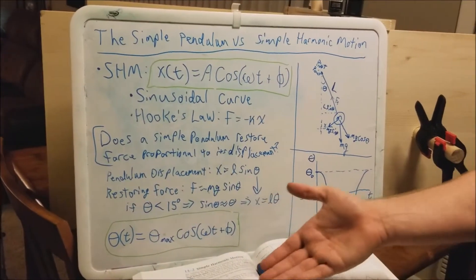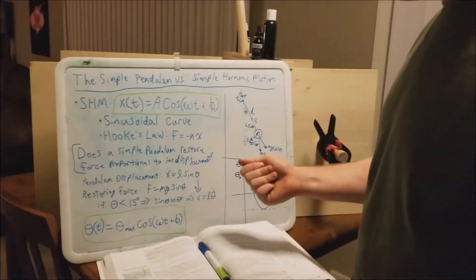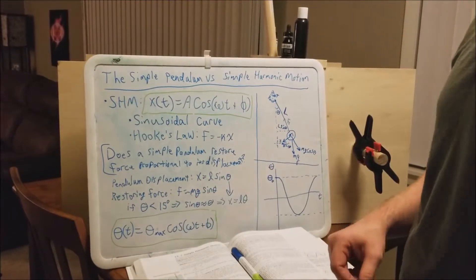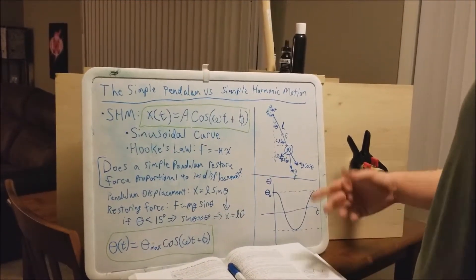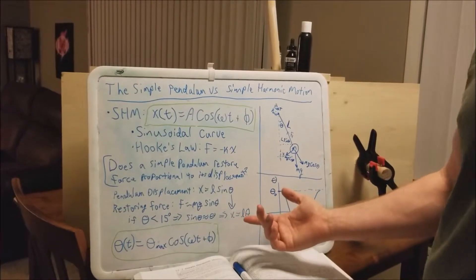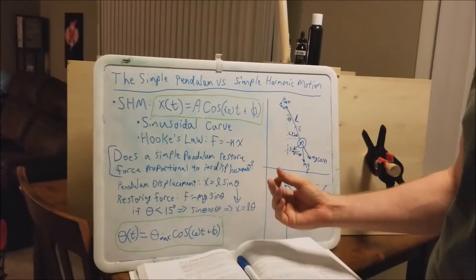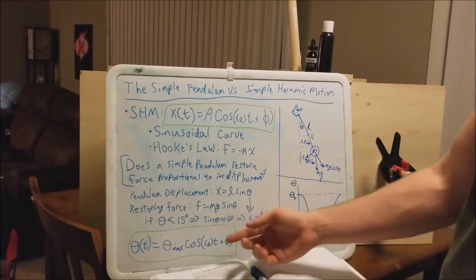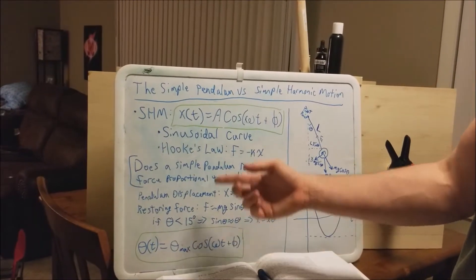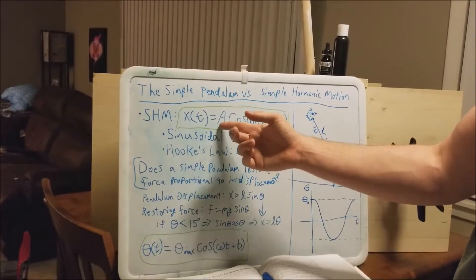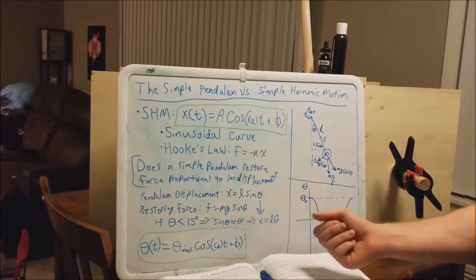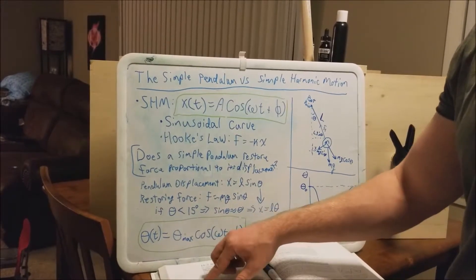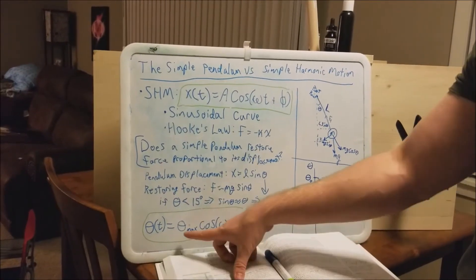The book itself says that it becomes simple harmonic motion when theta is less than 15 degrees. So once we have that, we can manipulate the normal equation of pendulum motion and get this equation here, which is very similar to the spring simple harmonic motion. The only difference is that instead of displacement as a straight distance, it is angular displacement.